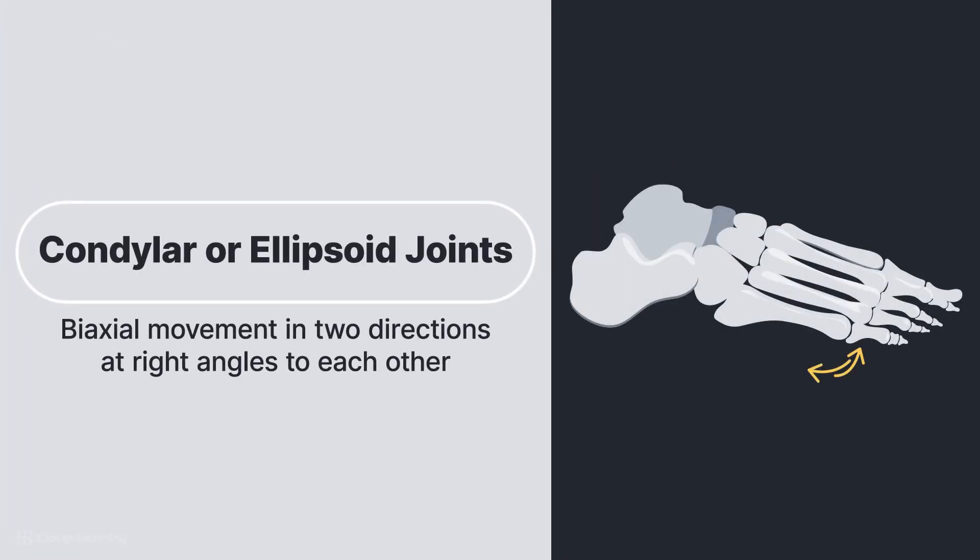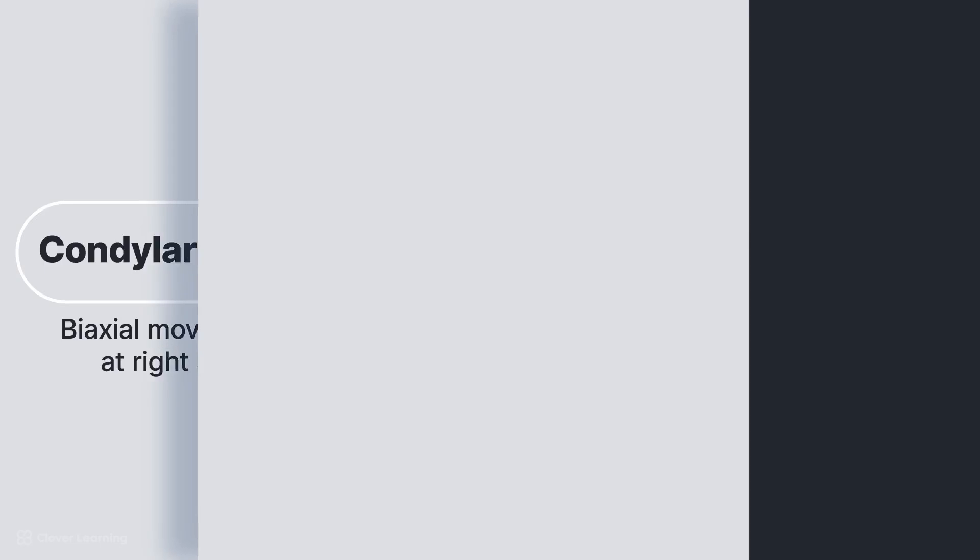Condylar, or ellipsoid joints, provide biaxial movement in two directions at right angles to each other, such as flexion-extension, abduction-adduction, and circumduction. Examples of ellipsoid joints include metacarpophalangeal joints of the fingers, the radiocarpal or wrist joint, and the metatarsophalangeal joints of the toes.